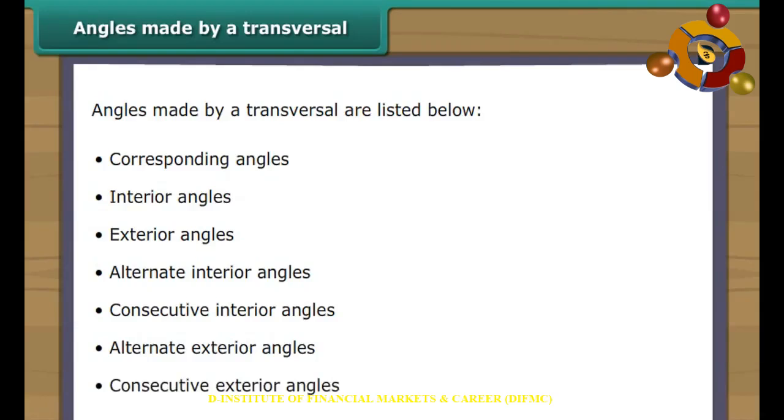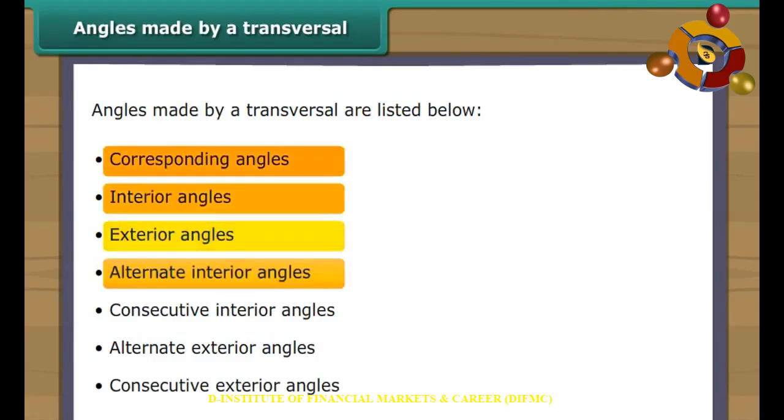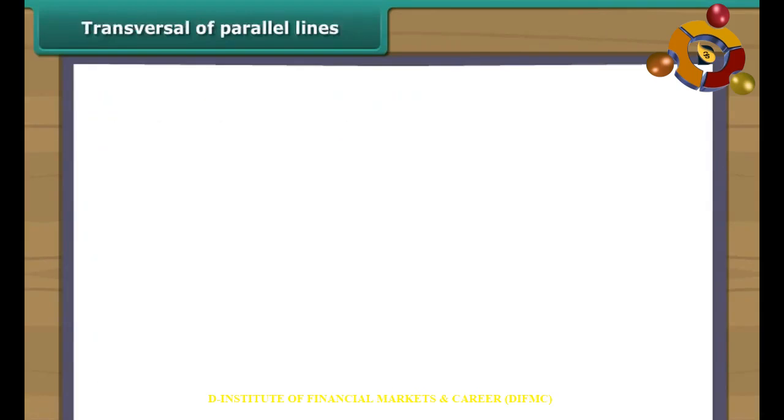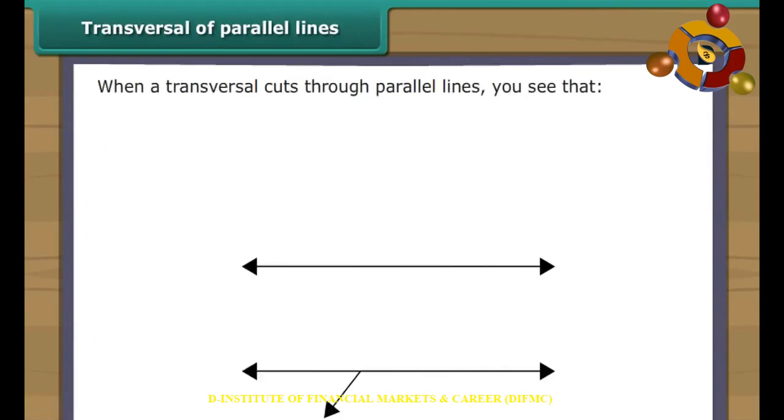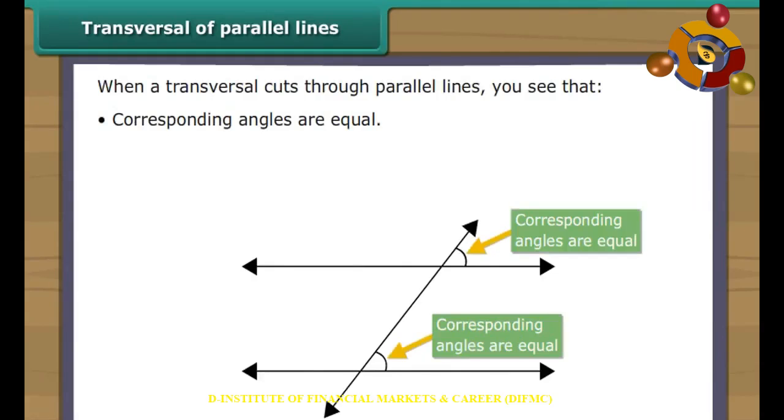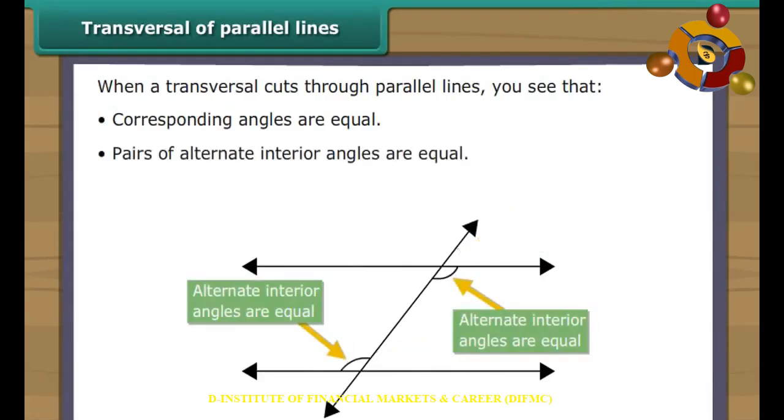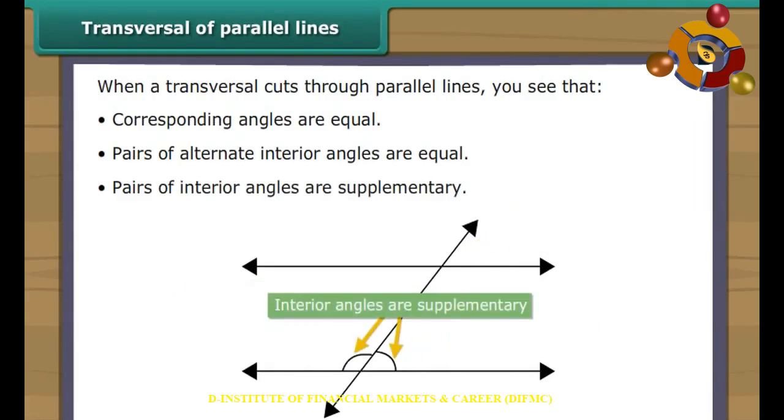Transversal of parallel lines. When a transversal cuts through parallel lines, you will see that corresponding angles are equal, pairs of alternate interior angles are equal, and pairs of interior angles are supplementary.